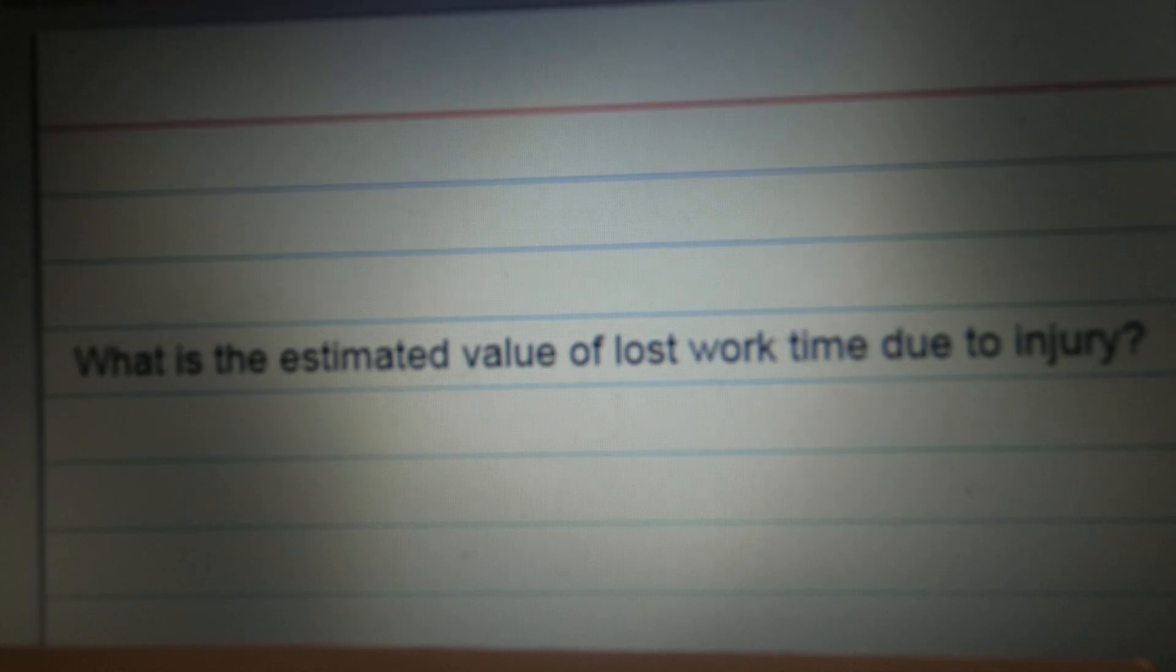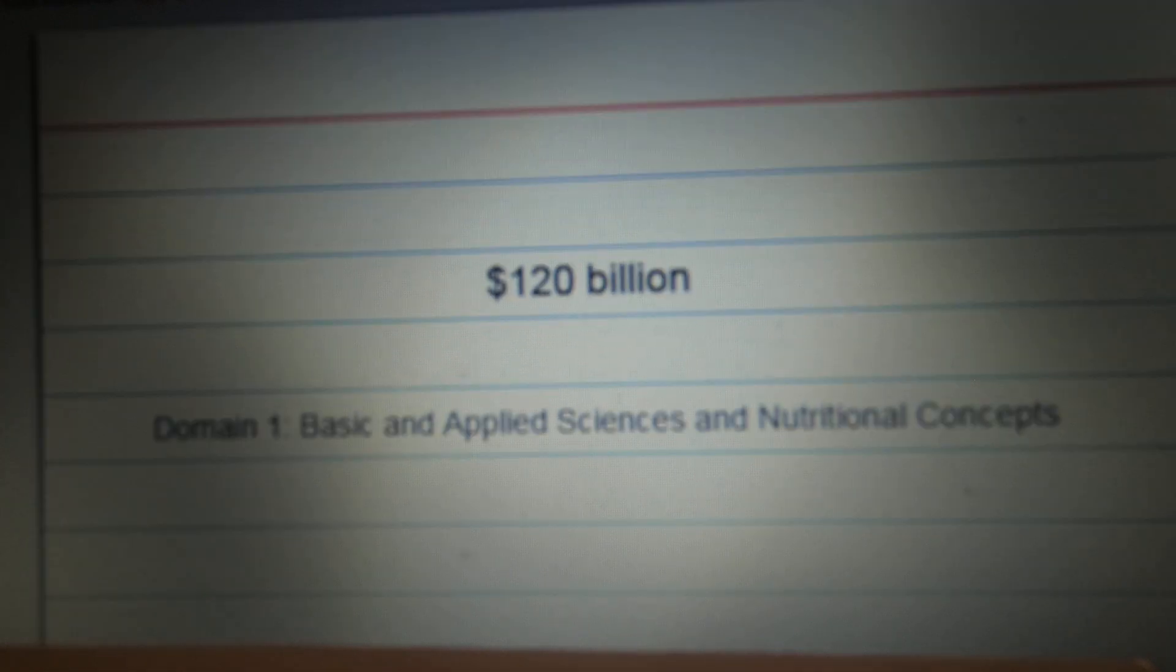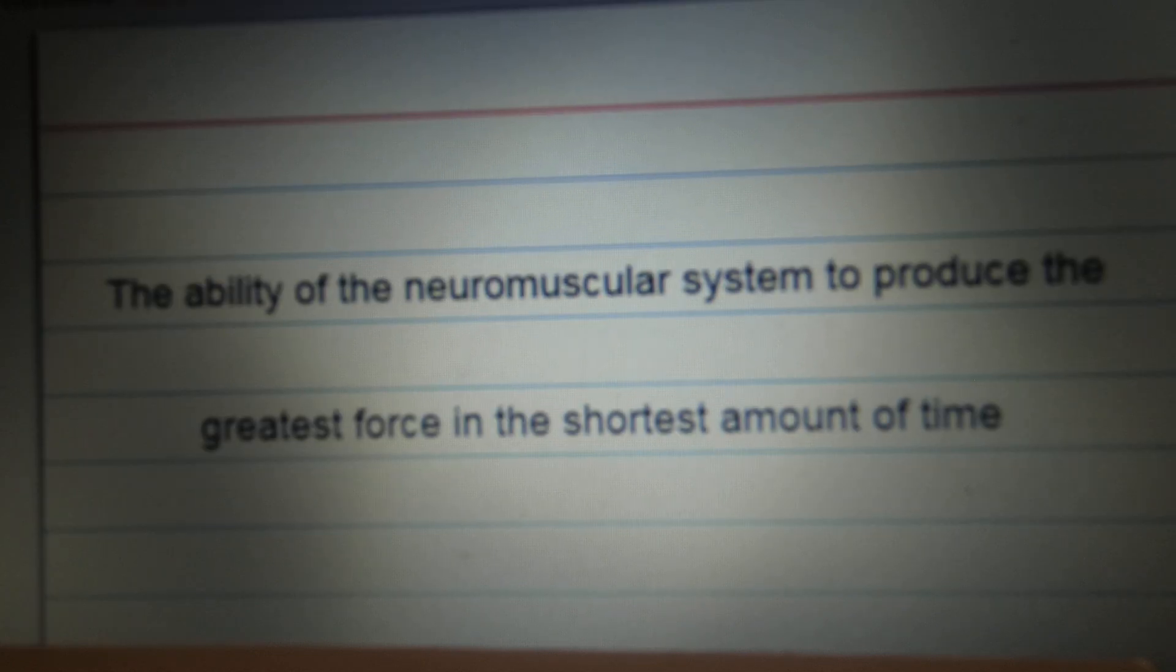What is the estimated value of lost work time due to injury? 120 billion. The ability of the neuromuscular system to produce the greatest force in the shortest amount of time. Power.